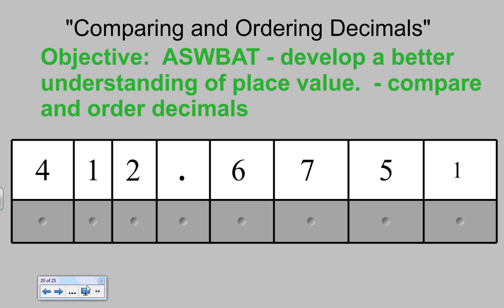Let's take a look at our first example. When we're examining place value and we look at the four in this example, we have to think about what its place value is. In order to understand where its place value is, we have to first look at the decimal. One place to the left of the decimal we have the ones place, and if you go over another place value it is the tens place.